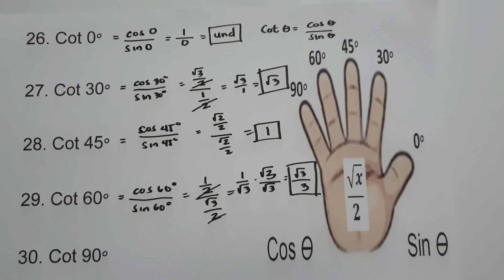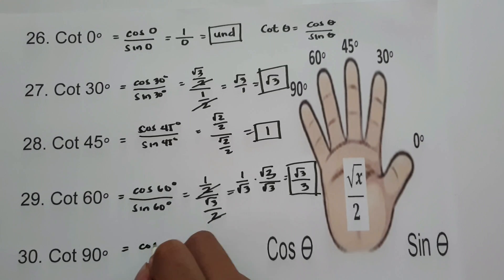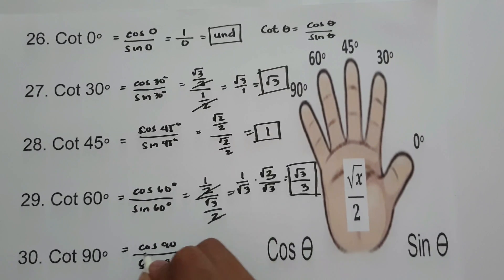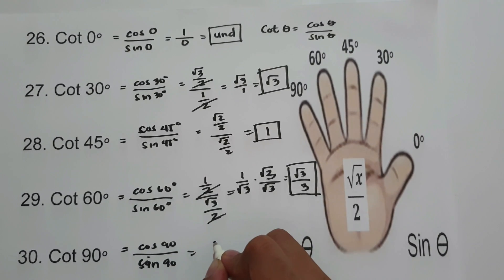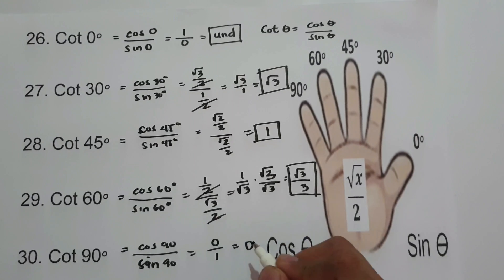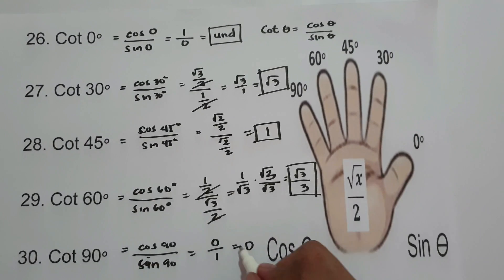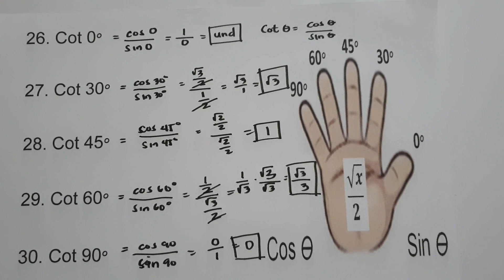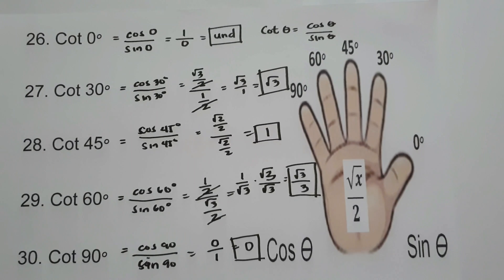For cotangent 90°, that is cosine 90° over sine 90°. Cosine 90° is 0, and sine 90° is 1. So 0 divided by 1 is 0. Cotangent 90° is 0. I hope you will learn from this lesson. Thank you so much for watching and God bless us all.